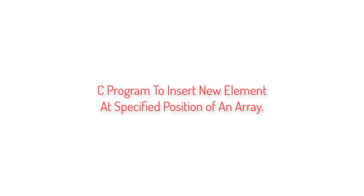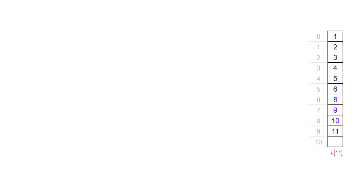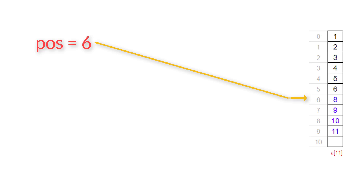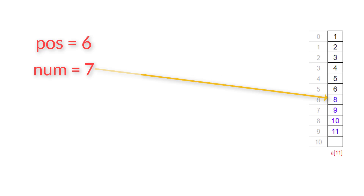Write a C program to insert a new element at a specified position of an array. Assume we have an array variable A of size 11. We ask the user to enter 10 elements from index 0 to 9, leaving the last index empty. If the user wants to insert a new number at position 6, we need to move all elements after position 6 downwards by one position.